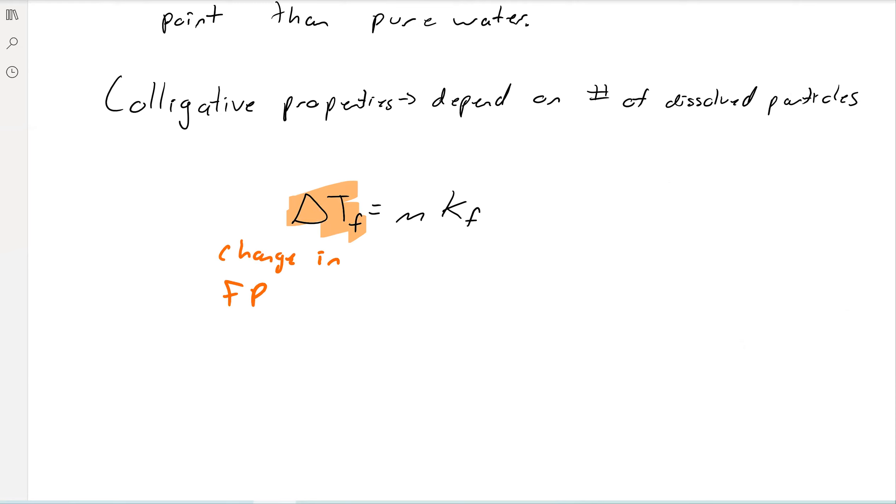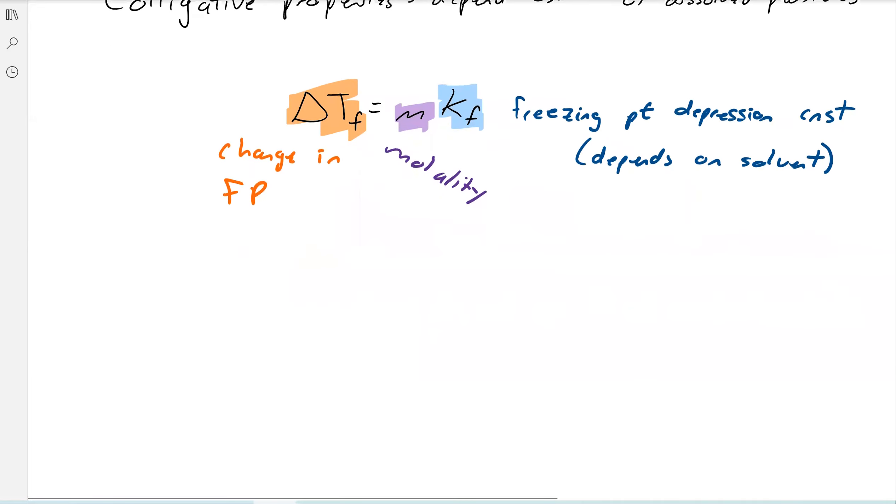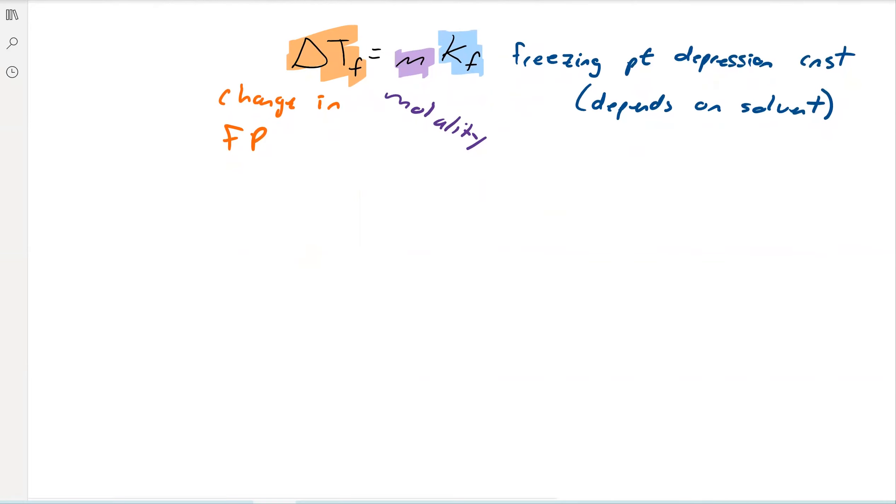M is the molality of the solution, and then K_F is the freezing point depression constant, which depends on the solvent. Every solvent is going to have a different freezing point depression constant than anything else.